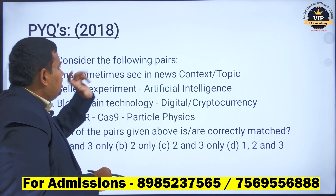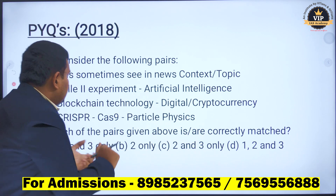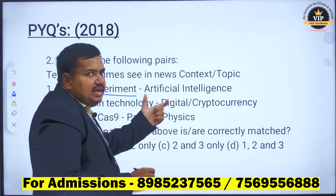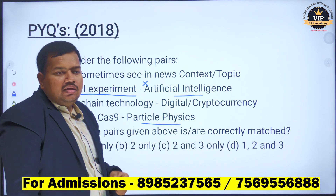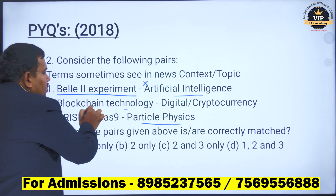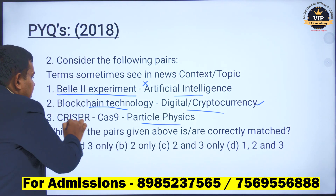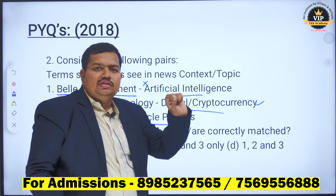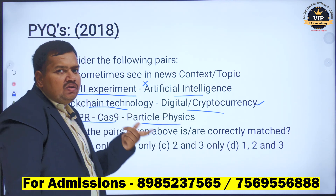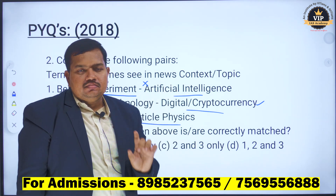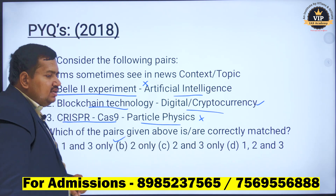From the 2018 prelims: consider the following pairs — terms sometimes seen in news matched with their context. First, the Belle experiment is related to artificial intelligence — that is wrong; the Belle experiment is actually related to particle physics. Second, blockchain technology is related to digital or cryptocurrency — we know that is absolutely right, so the second statement is correct. Third, CRISPR-Cas9 is related to particle physics — that is also wrong. CRISPR-Cas9 is used for genetic editing, not particle physics. So only statement 2 is right, and the answer is 2 only.